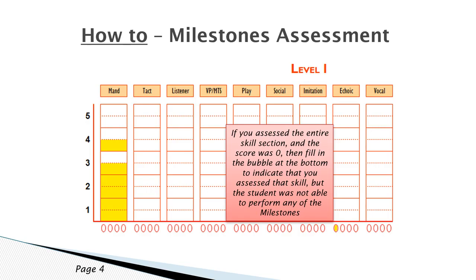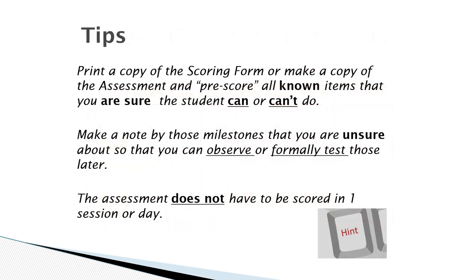If you have assessed the entire skill section and the student received zero points, fill in the bubble at the bottom. This indicates that you assessed the skill but no points were credited. Remember that this assessment does not have to be completed in a day. You can pre-score any known items that you know the student can or cannot do, and make a note next to items that you need to formally observe or test.